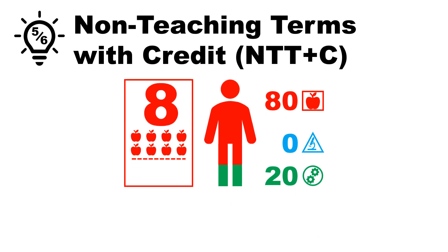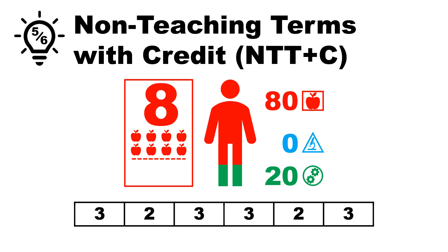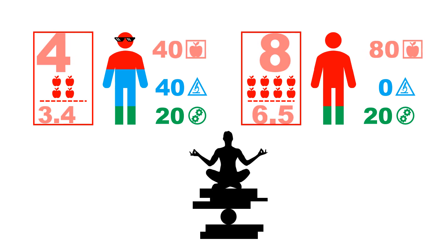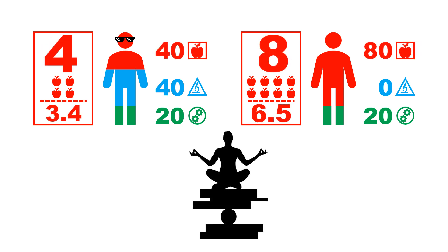Let's examine the impact of an NTTC on our model professor teaching stream, and consider six terms of teaching tasks. Their teaching load over that two-year period would be 16, distributed as 3-2-3, 3-2-3. Because the sixth term would be a non-teaching term with credit, by definition they would not teach in that term, and they would be credited for three teaching tasks. So while they receive credit for 16 teaching tasks, they only perform 13 teaching tasks, resulting in an effective teaching load of 6.5. Comparing our two models, with the OG professor on the left and the professor teaching stream on the right, everything is balanced, including their workloads, teaching loads, and effective teaching loads.